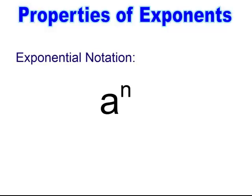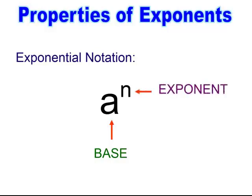Properties of exponents. To define exponent notation, the base is the number that is going to be multiplied to itself, and the exponent is how many times you multiply the base to itself.